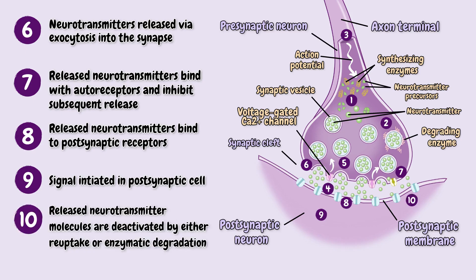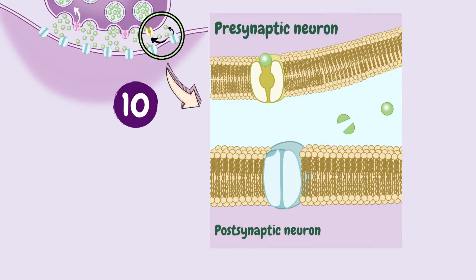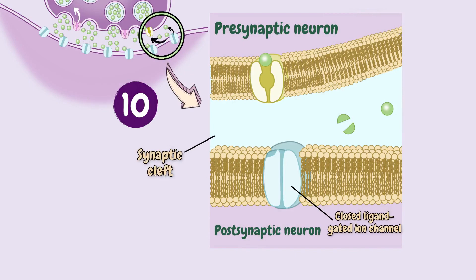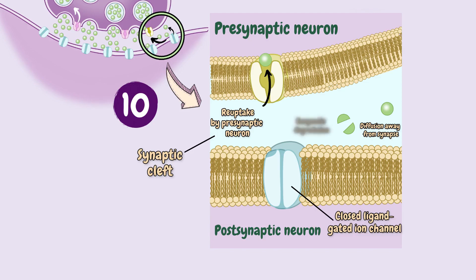And finally number ten, the released neurotransmitter molecules are deactivated by either reuptake or enzymatic degradation. Eventually the neurotransmitter molecules must be cleared from the synaptic cleft. Some will simply drift away in a process called diffusion, and in some cases the neurotransmitter is taken back up into the presynaptic neuron in a process called reuptake. Once back inside, the neurotransmitter can be recycled and reused. Enzymes can also break down the neurotransmitter within the synapse, with component parts sent back into the presynaptic neuron to make more neurotransmitters.